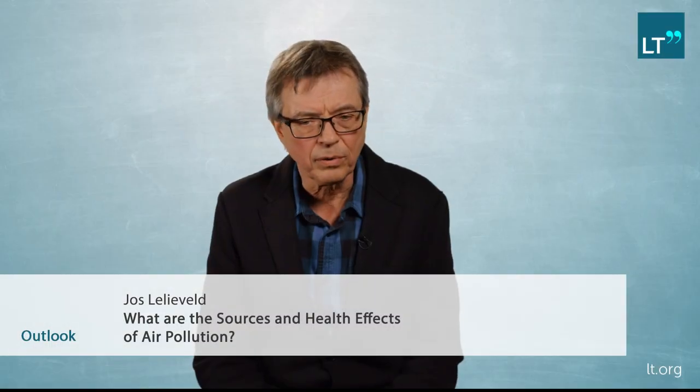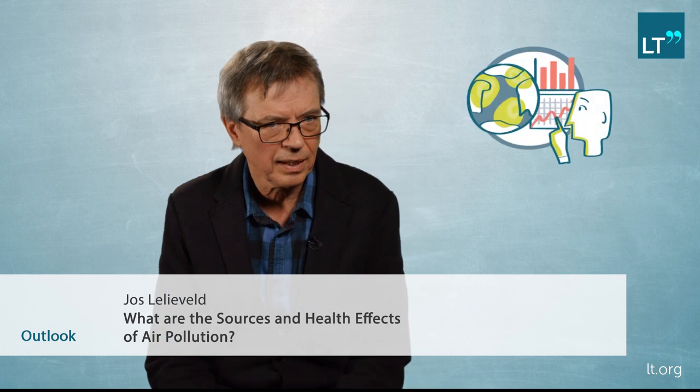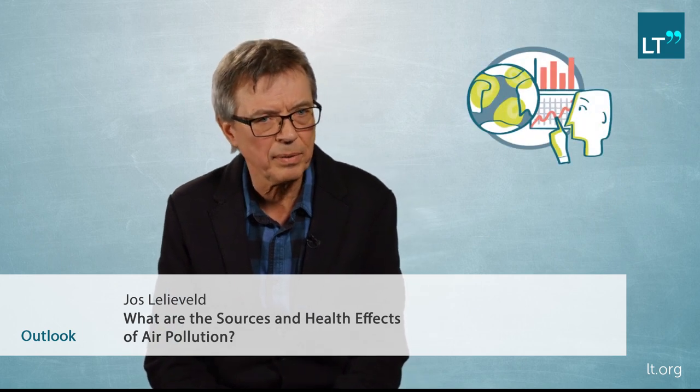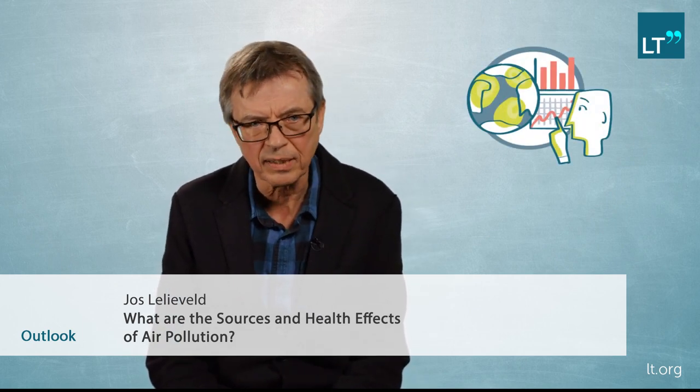The outlook is that we need to reduce uncertainties. There is a number of 3.3 million people per year dying from air pollution, but in reality there is an uncertainty of about plus or minus 50 percent. So it could be 1.6 million, which is still a large number, or it could be 4.8 million per year, which is a huge number. We need to reduce these uncertainties to tell policymakers where and how to most effectively reduce the problem.